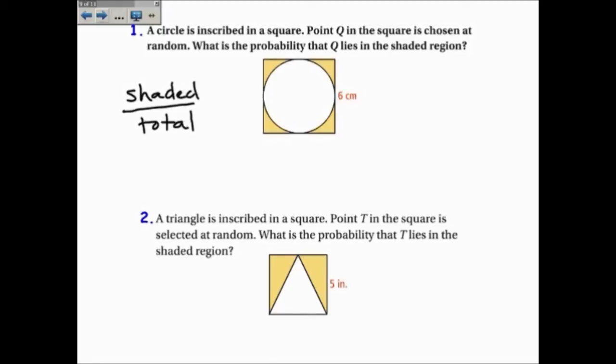We're going to find the shaded region divided by the total area, meaning the square. Now, the shaded region is going to be the area of the square minus the area of the circle. So if I subtract the area of the circle, what I'm left with is these pieces in the corner.